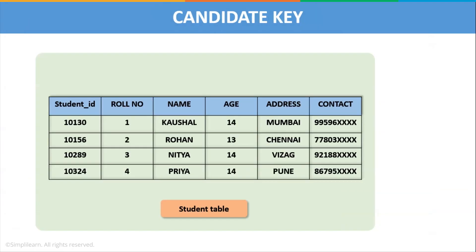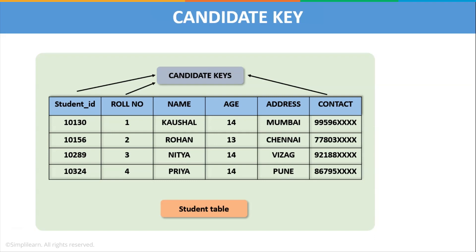Let us understand this with an example. Consider the students table with columns such as student ID, role number, name, age, address, and contact. We can take student ID as the primary key. With that, we can also take role number as well as the contact of the students as candidate keys, because all three of these columns alone can uniquely satisfy the condition of the candidate key.